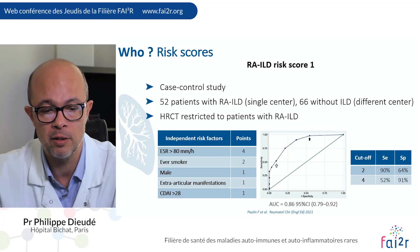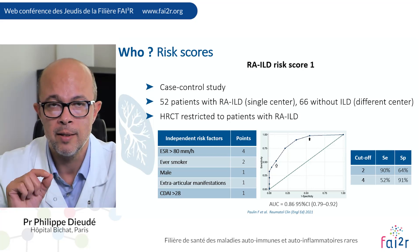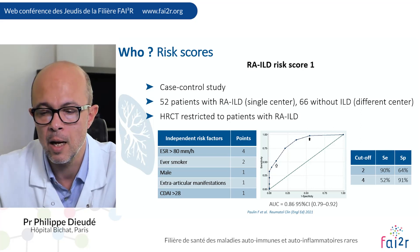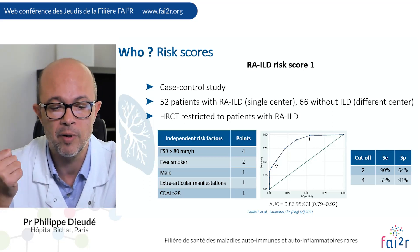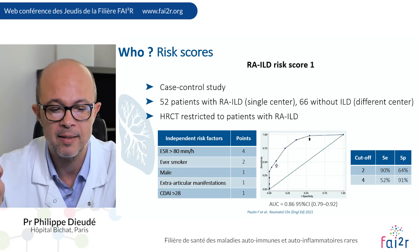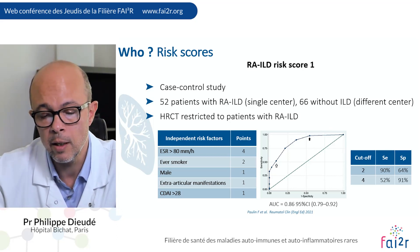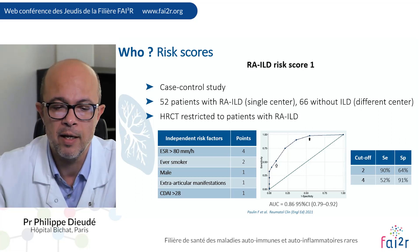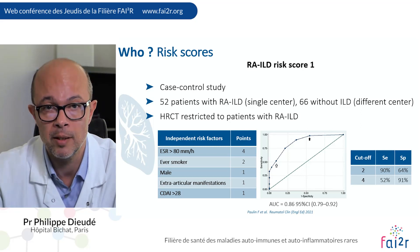This first study is coming from Argentina — a case-control study, unfortunately including only symptomatic patients, so this is not really answering the question for screening. The authors identified the activity of RA by the SDAI as an independent risk factor, the presence of extra-articular manifestations, male sex, smoking, and elevated ESR. The performance of the score was quite good, but unfortunately there is no independent replication available, and this risk score has not been investigated in asymptomatic patients.